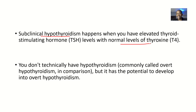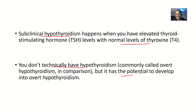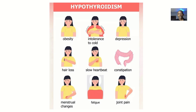So if TSH has been used up already, T4 should be low — but now you have high levels of TSH and normal T4. So you don't technically have hypothyroidism, commonly called overt hypothyroidism. However, subclinical hypothyroidism has the potential to develop into overt hypothyroidism — it's just starting.